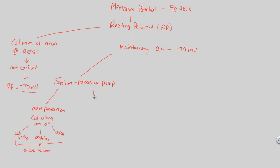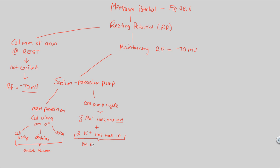The sodium-potassium pump does exactly what its name implies — it pumps sodium and potassium. Specifically, one pump cycle causes movement of sodium and potassium in a very specific way. Three sodium ions — positively charged Na+ ions — move out of the cell, and then two potassium ions move in. Notice the difference: this process goes against the concentration gradient and must occur via active transport.